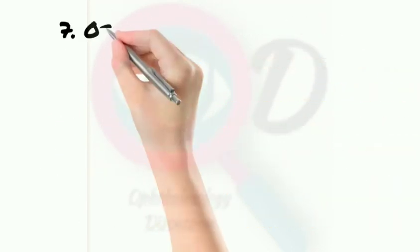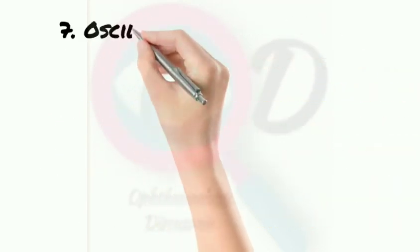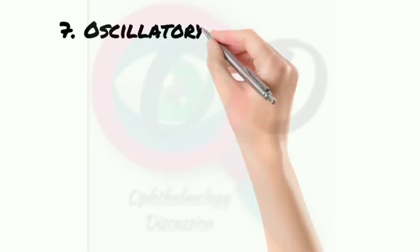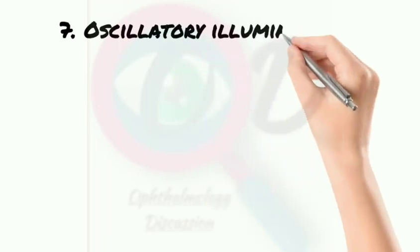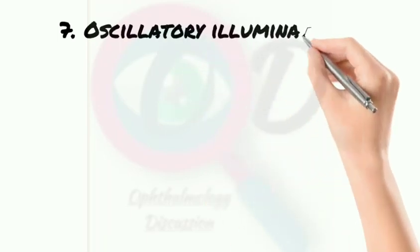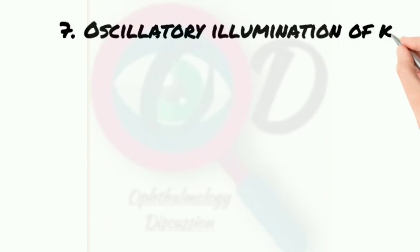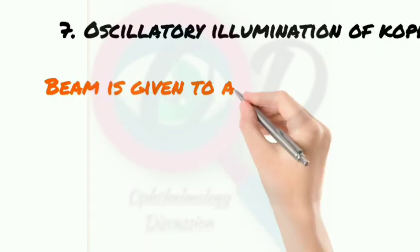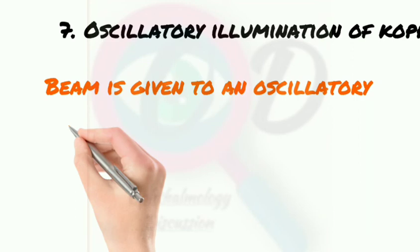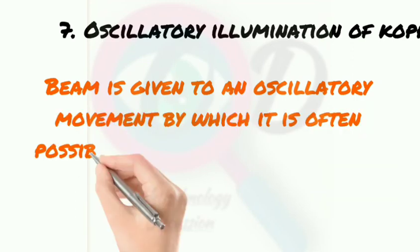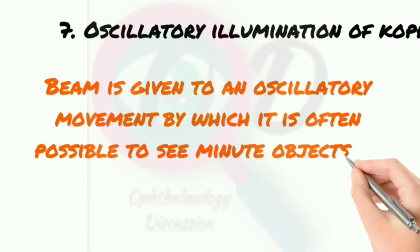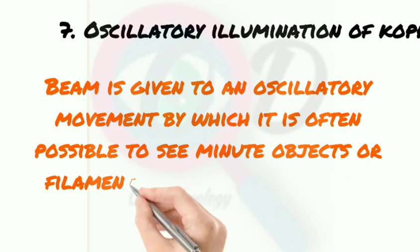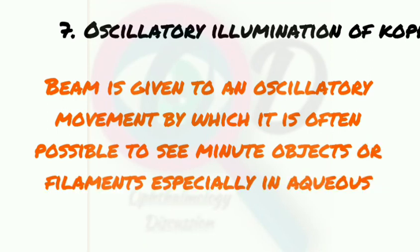The seventh and last type is oscillatory illumination of Cope. In this technique, the beam is given an oscillatory movement, by which it is often possible to see minute objects or filaments, especially in the aqueous.